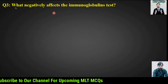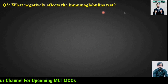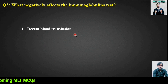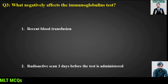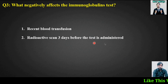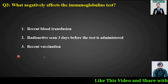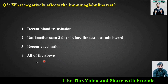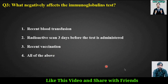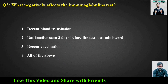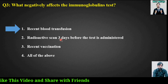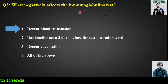MCQ number 3: What negatively affects the immunoglobulin test? Options are: recent blood transfusion; radioactive scan 3 days before the test is administered; recent vaccination; or all of the above. The right answer is option 1 — recent blood transfusion will negatively affect the immunoglobulin test.